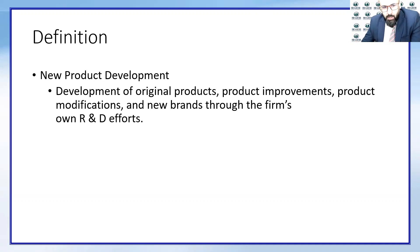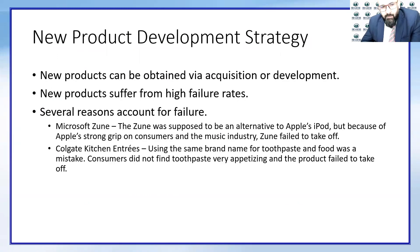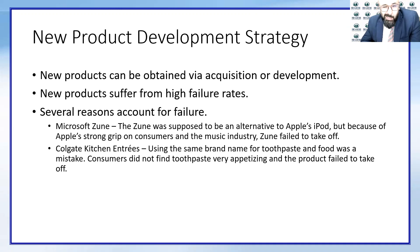Research and development is not the only way to have a new product. A new product can be obtained via acquisition or development. Acquisition means you're looking into a product already in the market, and you could buy that product to put it under your company's name. For example, recently Facebook purchased Instagram — that is what is called acquisition. Or it could be through research and development efforts.